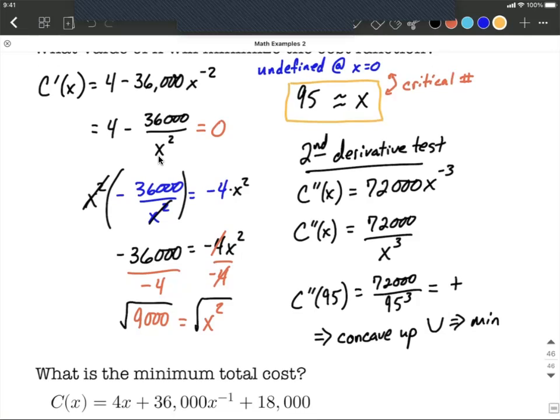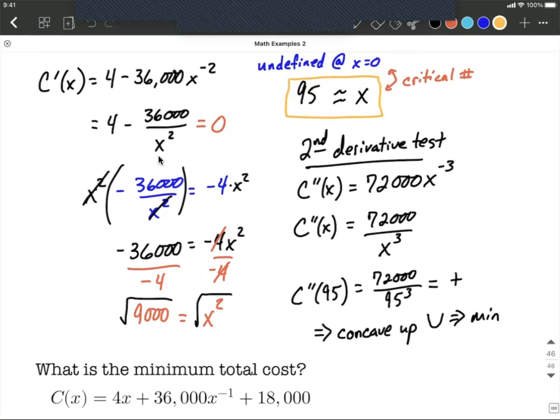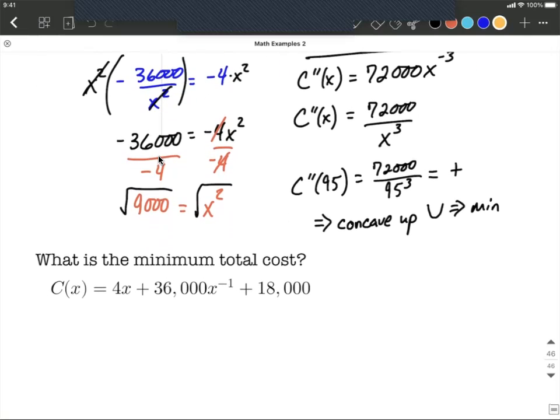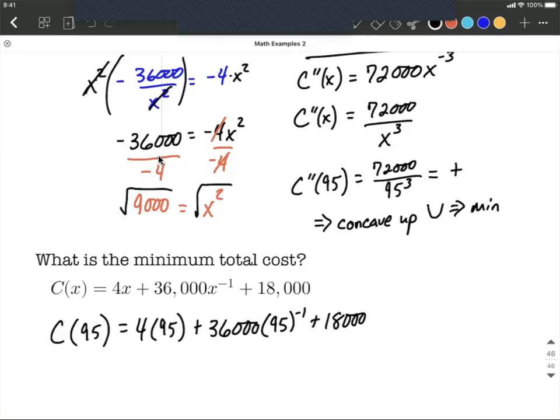Next let's use that value and figure out what the minimum cost is going to be. I know we could be a little bit more accurate if we use some decimals along the way or plugged in square root of 9,000 but let's just use 95. So the minimum total cost is going to be when we evaluate the cost function. I just copied this down from above and plug in 95. So 4 times 95 plus 36,000 times 95 raised to the negative first power plus 18,000. After we get the calculators out and evaluate all this, this is going to be 18,758 dollars and 95 cents for our minimum total cost.